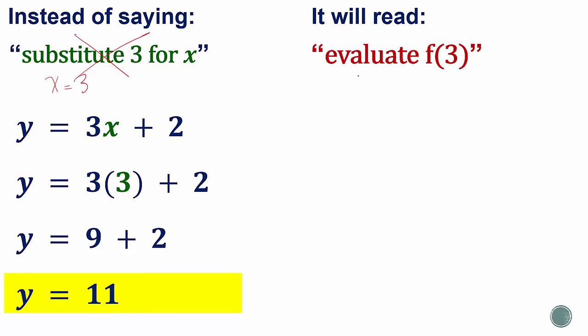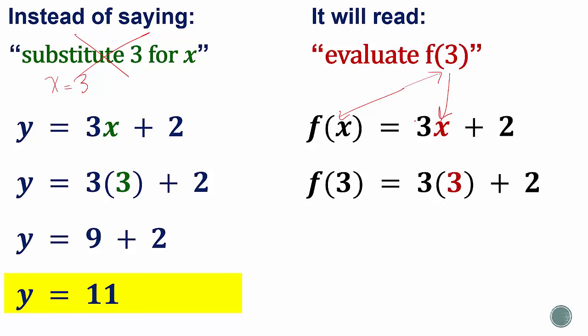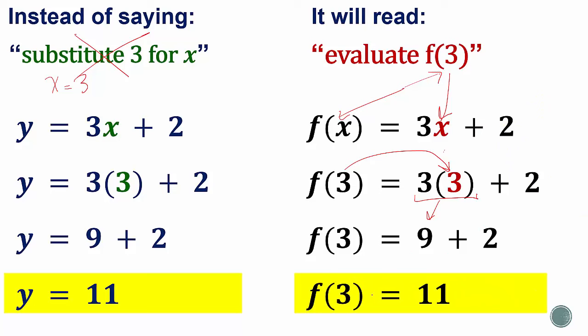We're not doing this anymore. Now what we're doing is we're going to say evaluate f(3). And what that means is we're going to take our original problem, and notice how this is in place of the x. So that means we're going to take x in the problem and put 3 in for it. So you're doing the exact same thing, except now we write f(3) equals 3 times 3 plus 2, and that 3 is going in for the x. So whatever this number is goes in there. 3 times 3 is 9, and then add the 2, you still end up with 11, except now we're going to say f(3) equals 11, which means that we evaluated f(3), came up with an answer of 11.